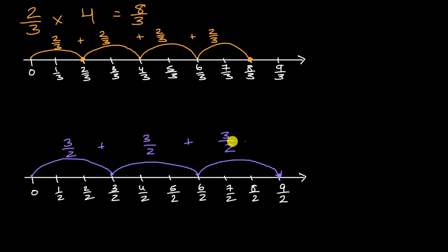Or another way of thinking about it is this is three jumps of three halves. So you could also view this as being the same thing as three times three halves. And what are these equal to? Well, three halves plus three halves plus three halves or three times three halves, it gets you to nine halves.